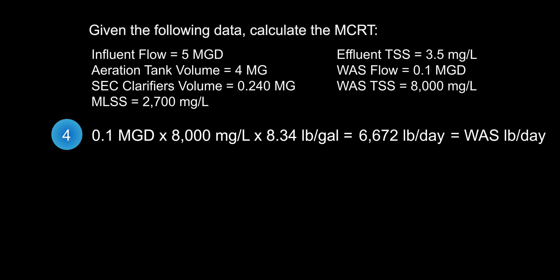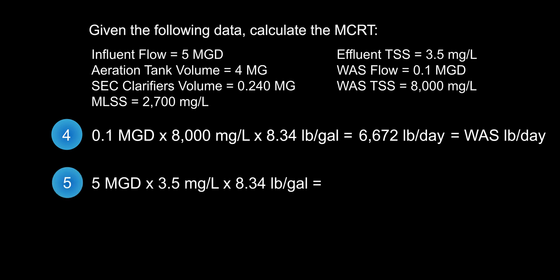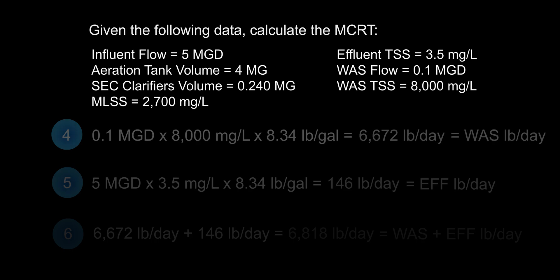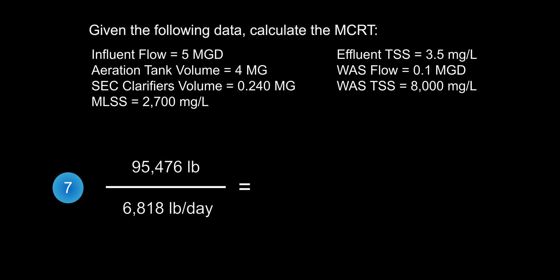In step five, we solve for solids lost per day through the effluent. In a properly working treatment plant, this number should always be very low. We take the influent flow of 5 MGD, multiply by effluent TSS of 3.5 mg/L, and multiply by 8.34 lb/gal, giving us approximately 146 pounds per day of effluent solids. Combining steps four and five: 6,672 plus 146 equals 6,818 pounds per day of solids leaving the plant. Finally, in step seven, we divide 95,476 pounds by 6,818 pounds per day — pounds cancel out — leaving us with 14 days. This is the length of time bugs are staying in our system.